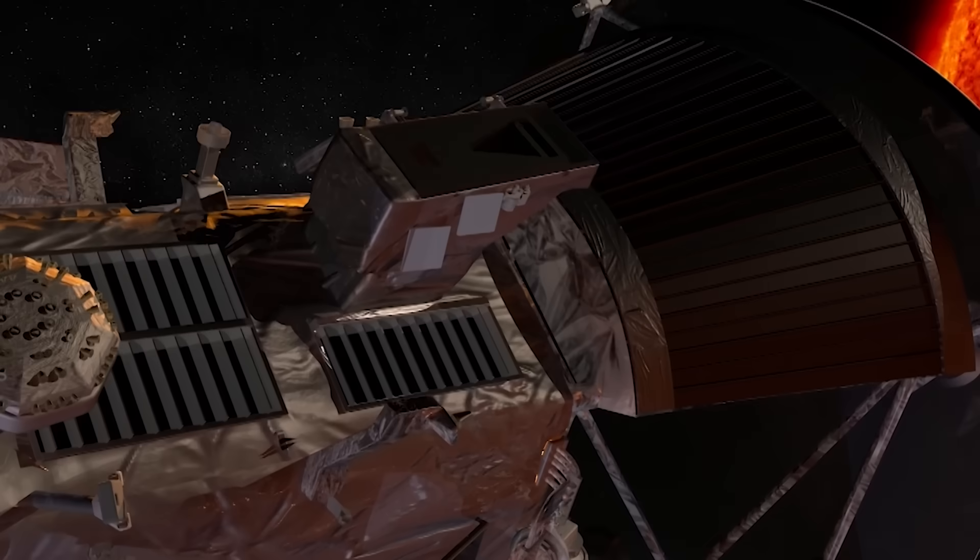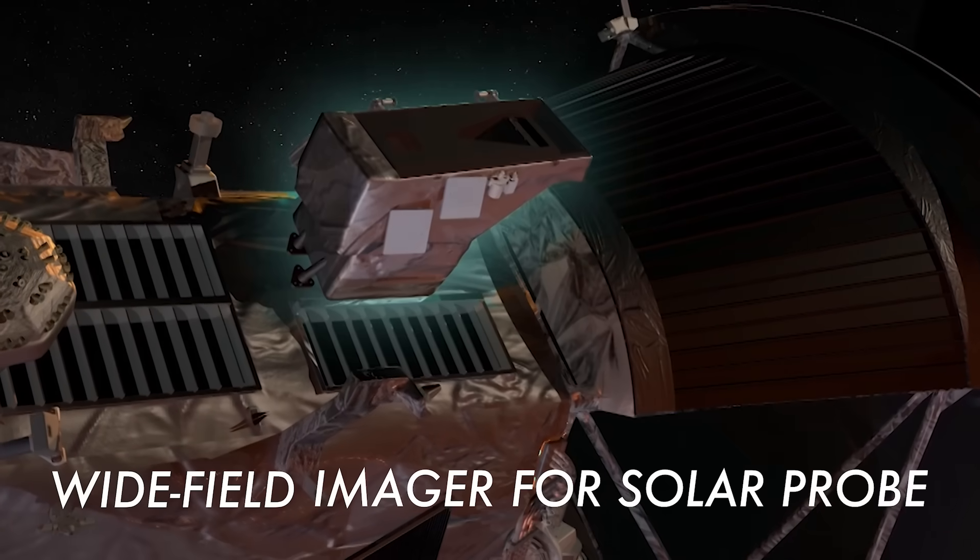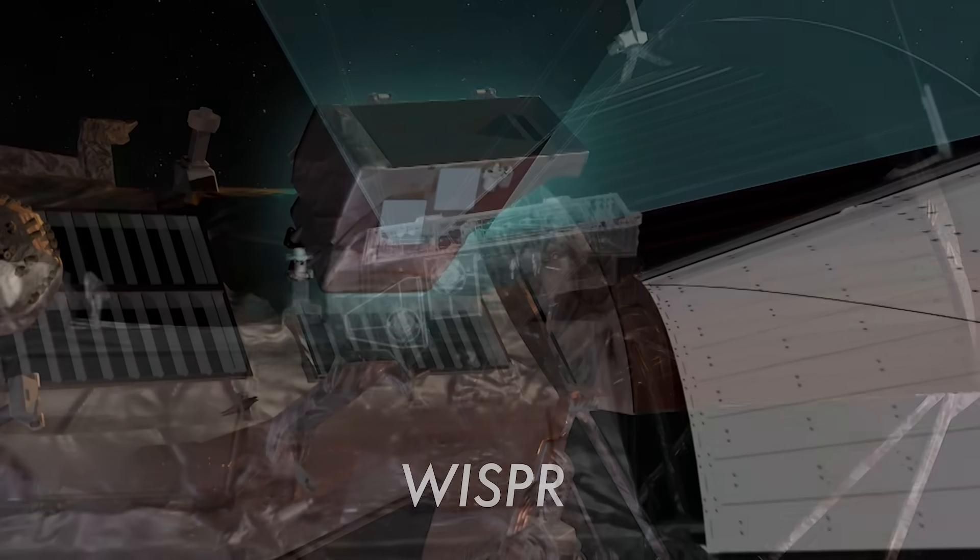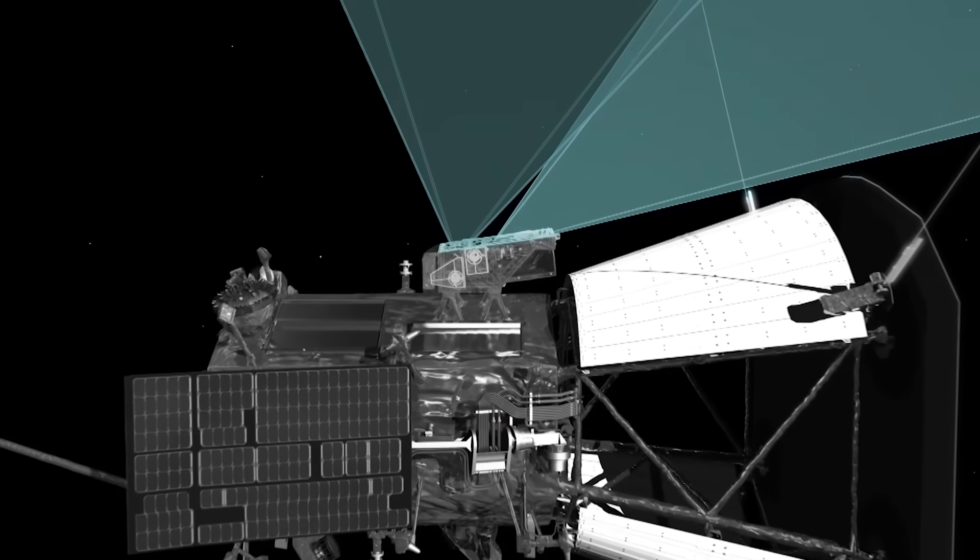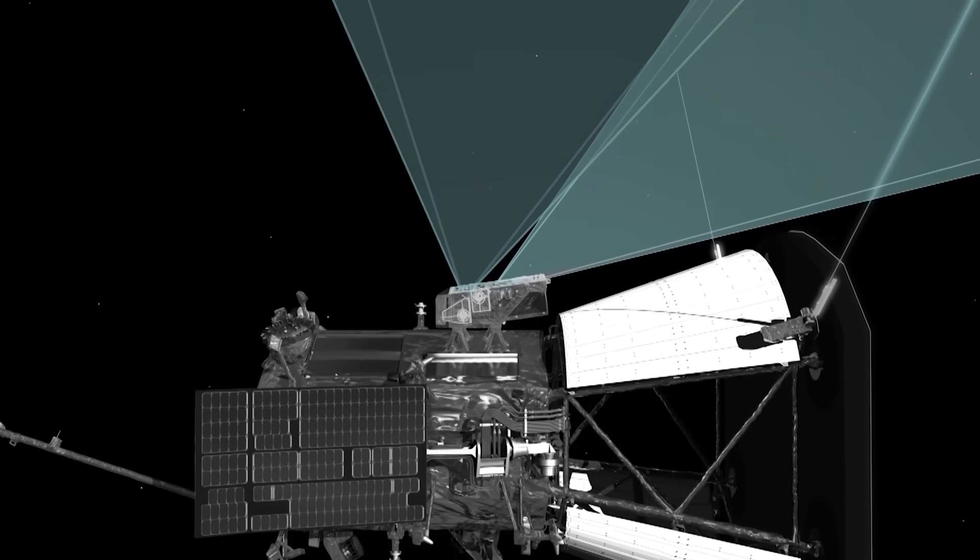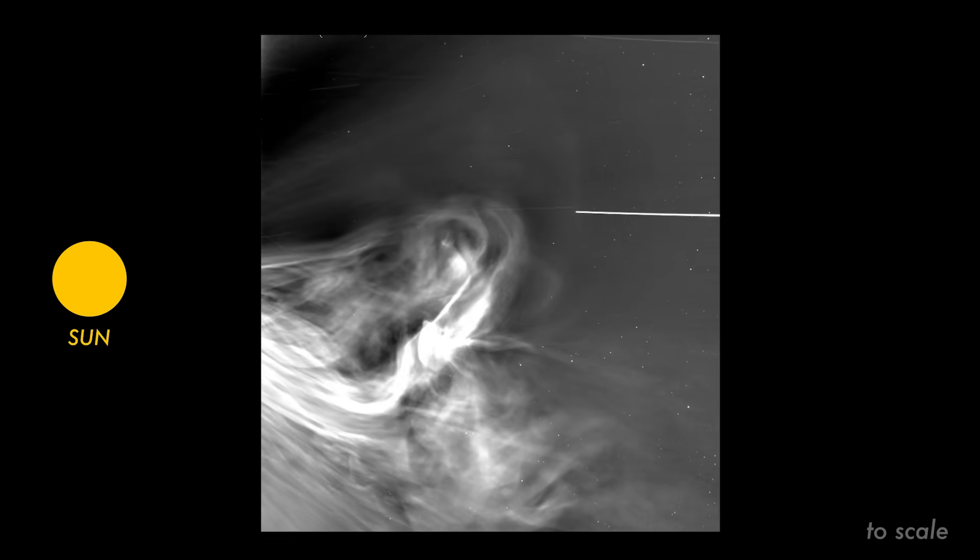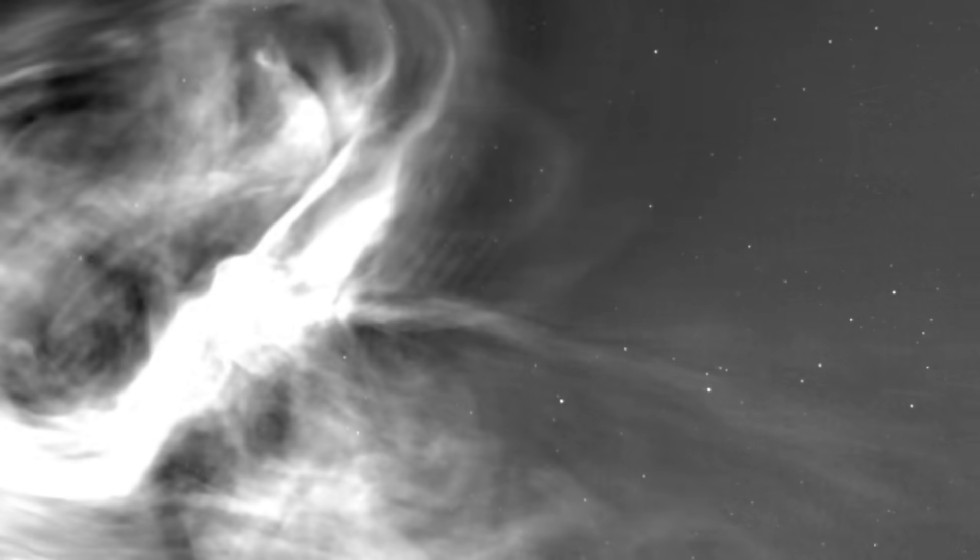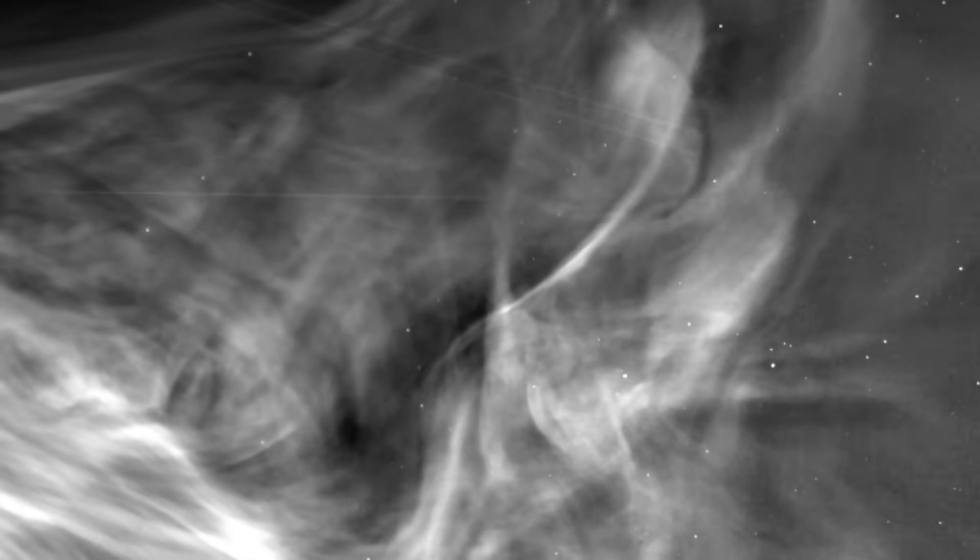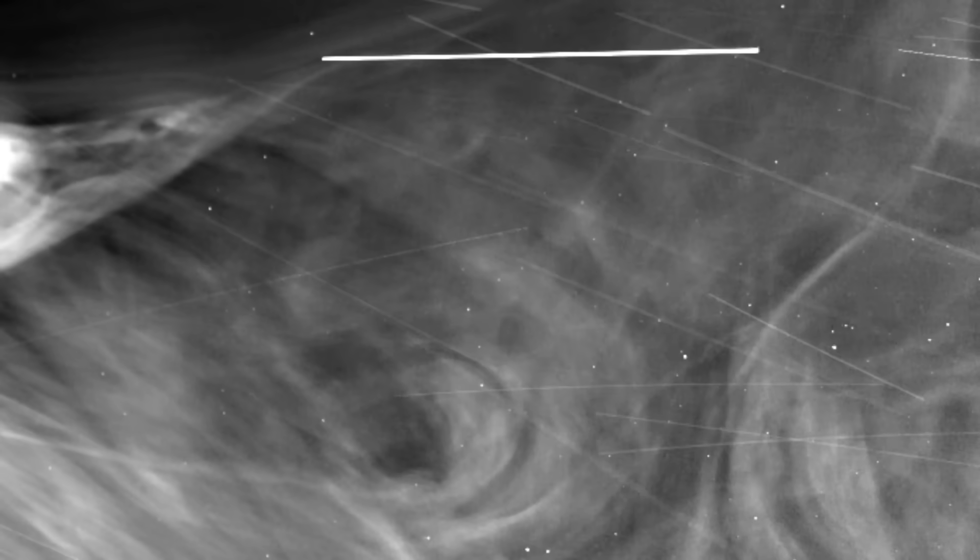These incredible visuals were captured by an instrument aboard the spacecraft called WHISPER, short for Wide Field Imager for Solar Probe. WHISPER doesn't look directly at the Sun. Instead, it captures visible light from solar material as it bursts away from the Sun. When these images were taken, Parker was flying within the Sun's atmosphere. It was literally touching the Sun.